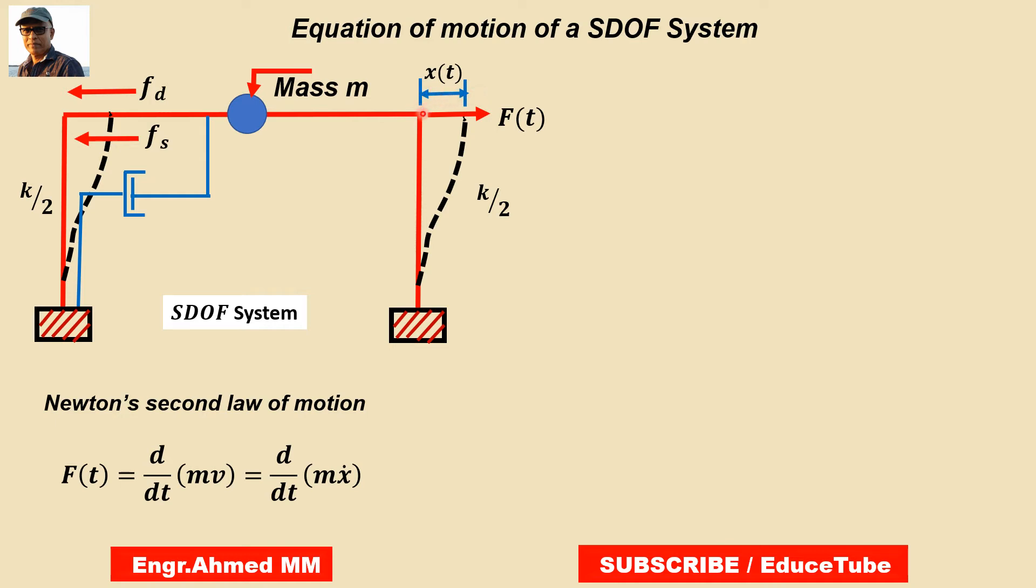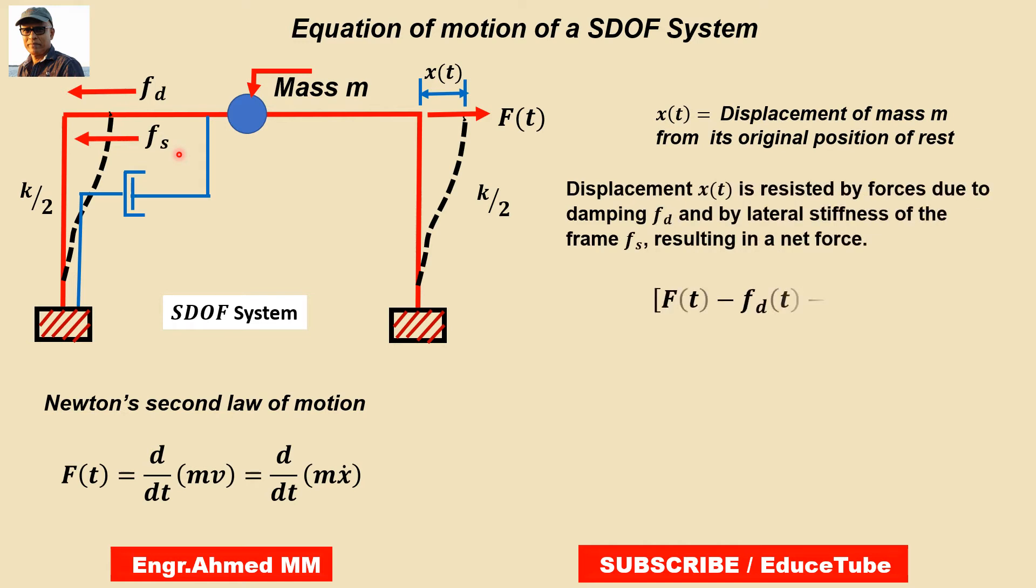So at any instance of time, such displacement Xt is resisted by a force. But that force comes due to damping Fd and the lateral stiffness of the frame, which in turn gives us a resulting net force. It means it will be Ft minus Fd minus Fs.